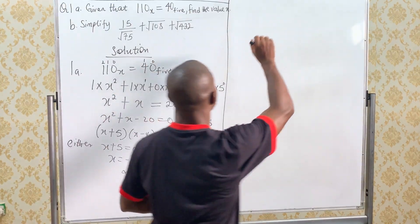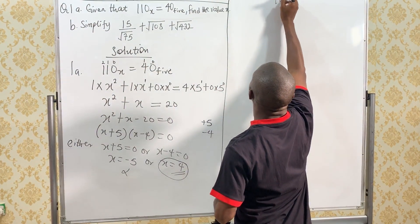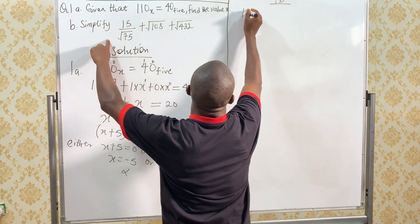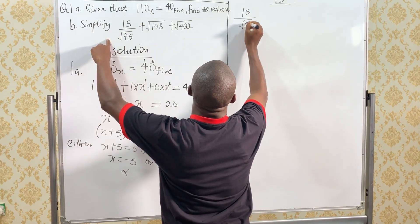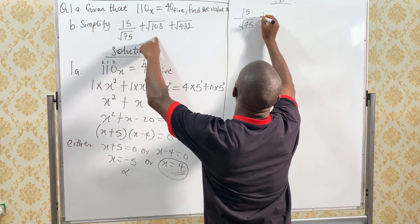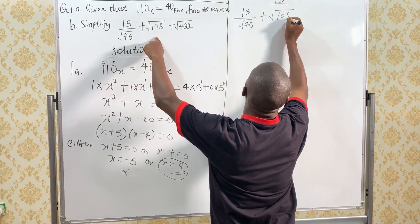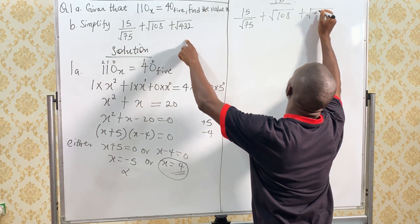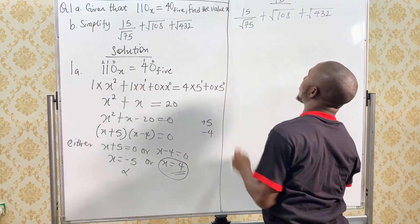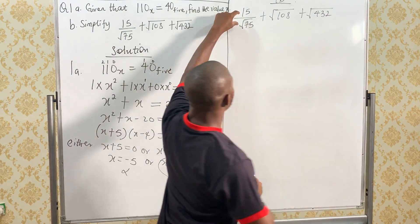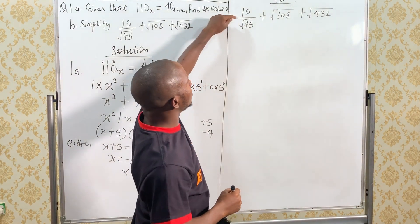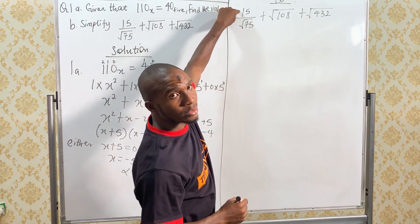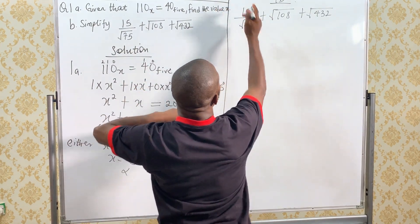Now, let's pick up question 1B. We have to simplify 15 over root 75 plus square root of 108 plus the square root of 432. Now, let's look at this. This can be rationalized. We can rationalize this so that this root can actually come up. If rationalized,